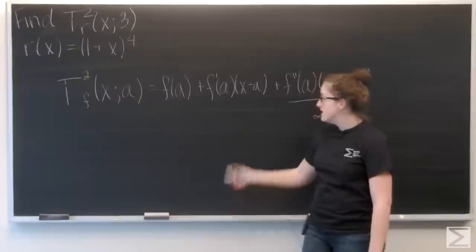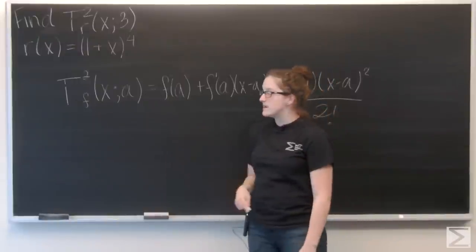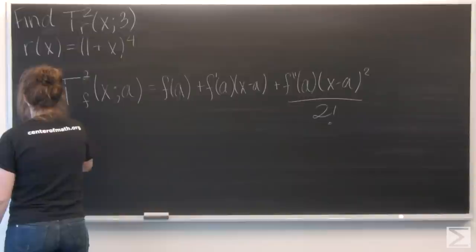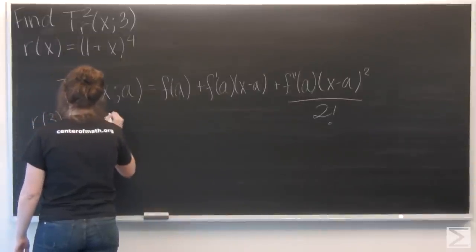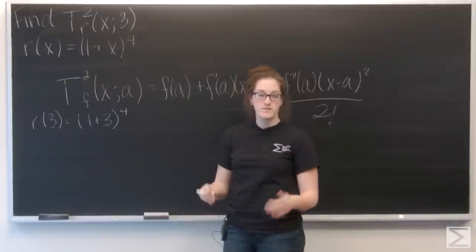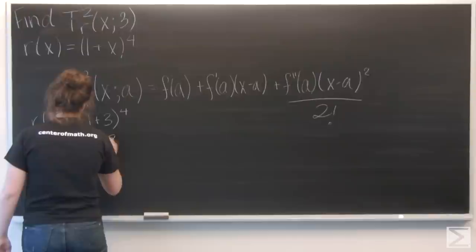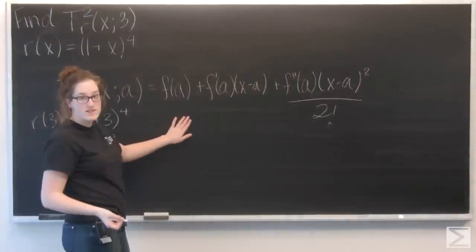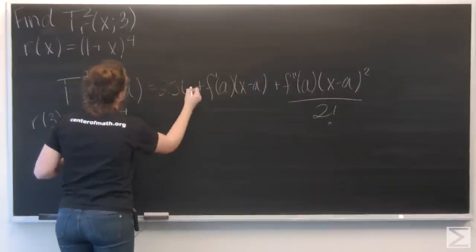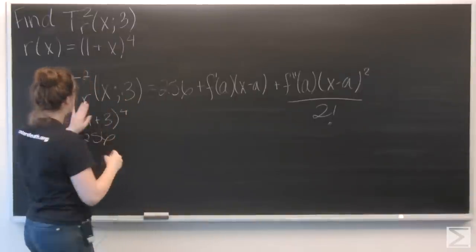So for this problem, that f is that r(x). So let's start by finding r(3), which is quantity (1+3) to the fourth, 4 to the fourth, 256. I'm going to go ahead and plug things in as I go. So let's switch these to r and 3.